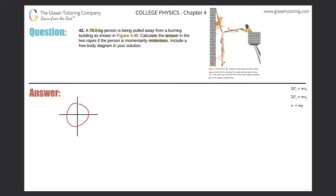Now let's turn our attention to the free body diagram. We have this person being pulled away from a burning building — she's just hanging there and she's temporarily motionless. Her weight pulls straight down, so there's a force W for the weight of the woman. Then there are two tensional forces: one pointing to the right at an angle of 10 degrees, and the other pointing slightly to the left at 15 degrees at the top — which by alternate interior angles is also 15 degrees at the bottom.